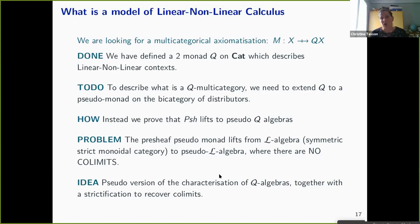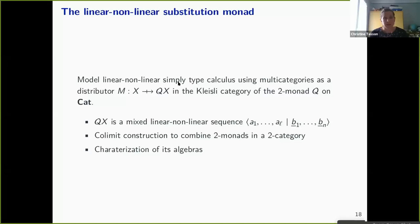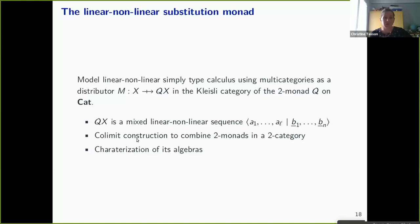To sum up, we wanted to model linear nonlinear simply typed calculus using multi-categories. For doing that, we described a context monad Q which, when applied to a category, gives mixed linear nonlinear sequences. We introduced a colimit construction to combine two monads in a two-categorical setting, and we gave a characterization of its algebras. Thank you for your attention.